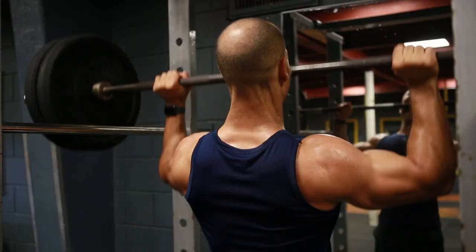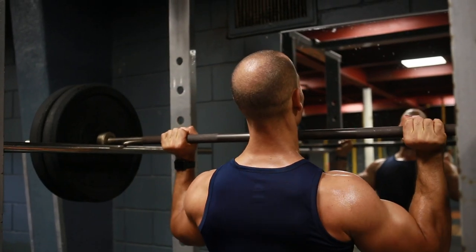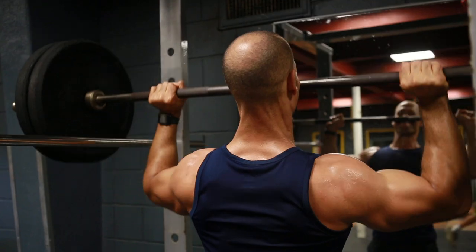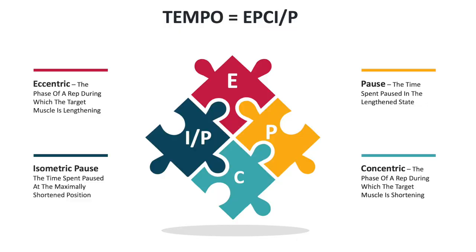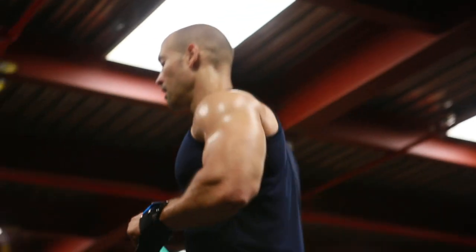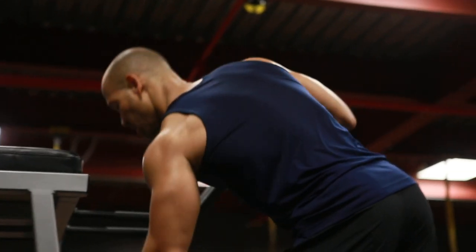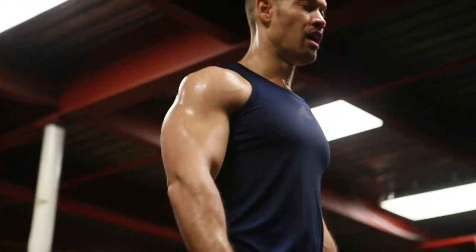Other variables include things like load or how much weight you use for an exercise, tempo or rep tempo which is the pace at which you perform each rep — closely related to time under tension — as well as rest period, the time taken between sets of the same exercise in order to recover. Understanding how best to train for an overall goal of hypertrophy, or really any other goal, requires some level of understanding of how these various variables interact with each other and how you can manipulate them to your advantage.